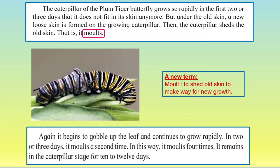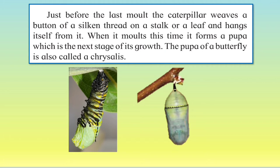It begins to gobble up the leaf again and continues to grow rapidly. In two or three days, it molts a second time. In this way, it molts four times. It remains in the caterpillar stage for 10 to 12 days. Just before the last molt, the caterpillar weaves a button of silk thread on a stalk or a leaf. You can see it makes a small button, either on the stalk of a tree or on the leaf, where it can stick itself and hang itself from it.